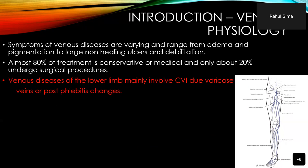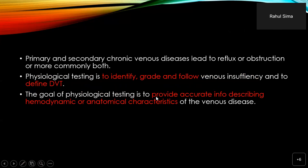Venous diseases of the lower limb mainly involve chronic venous insufficiency due to varicose veins or post-phlebitic changes. Primary and secondary chronic venous diseases lead to reflux or obstruction or more commonly both. The physiological testing we do is to identify, grade, and follow venous insufficiency and to define DVT. The goal is to provide accurate information describing hemodynamic or anatomical characteristics of such diseases.